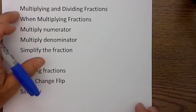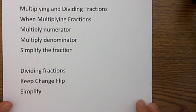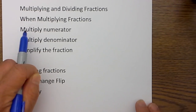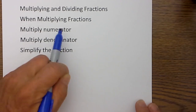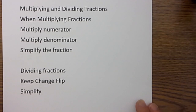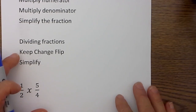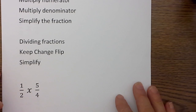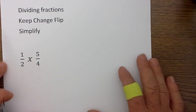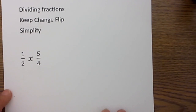Welcome to MooMooMath and Multiplying and Dividing Fractions. I personally find it easier multiplying and dividing fractions than adding and subtracting. When you are multiplying fractions, you simply multiply the numerators and then multiply the denominators, and then you simplify the fraction. When you divide, you keep, change, and flip, and then follow the rules of multiplication and simplify if you can. Let's look at a couple examples.